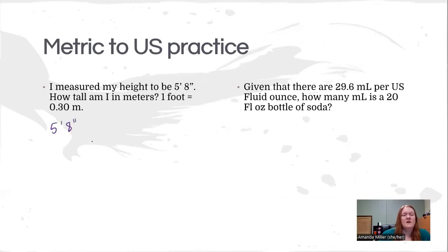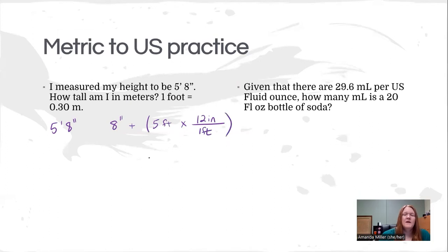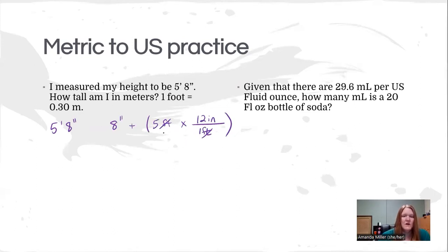If someone is five feet eight inches and I want to figure out how many meters they are, I first have to deal with this compound unit. I'll choose to convert everything into inches: 8 inches plus 5 feet times 12 inches per one foot. The important thing is I have to get these units to cancel in order to add them — I can't add two different units, just like one dollar and three quarters isn't four dollars.